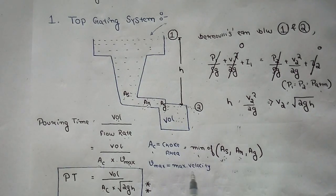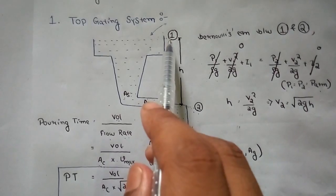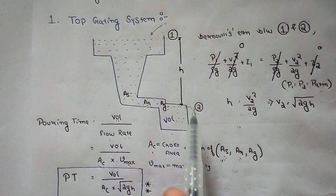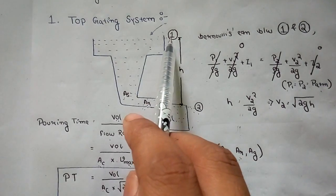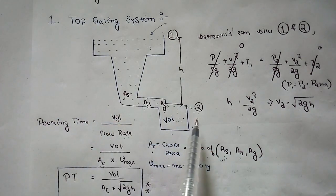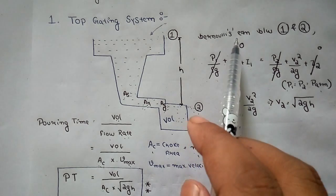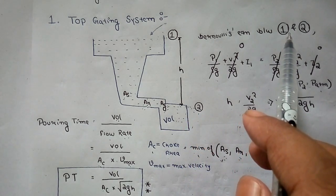Now, what is Vmax? Among V1 and V2, V2 will be maximum because V1 will have zero velocity at the initial stage. So we need to find V2. We can calculate V2 using Bernoulli's equation, applying it between points 1 and 2.